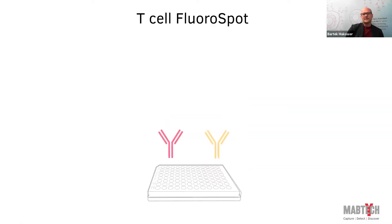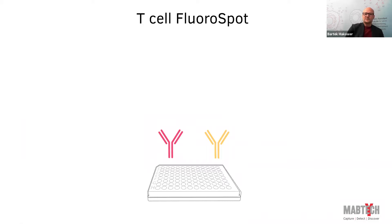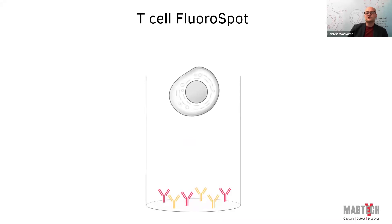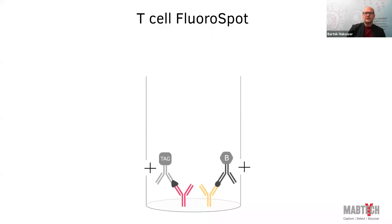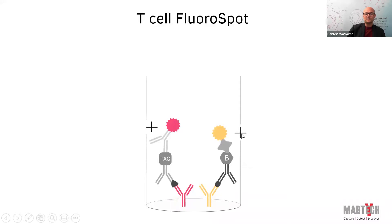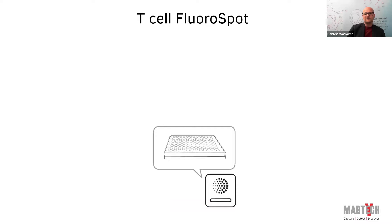FluoroSPOT, then, is a very similar assay but multiplexed — this shows a two-color FluoroSPOT, but it can be up to four. Coating with two separate antibodies against two different cytokines, stimulating cells which secrete two different cytokines, which are individually captured. We detect with secondary monoclonal antibodies — one is biotinylated, the other is tagged with a short peptide against which we have developed a high-affinity monoclonal antibody conjugated to a fluorophore. The two fluorophores are different colors, so we can analyze this in a specific reader and look at cells secreting only one or both cytokines simultaneously. Using four colors generates quite a lot of data.